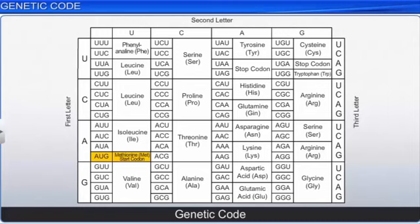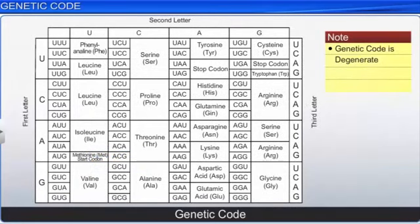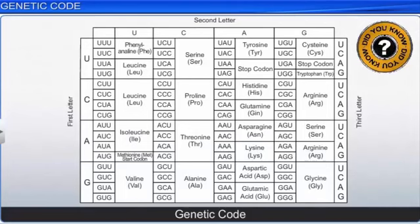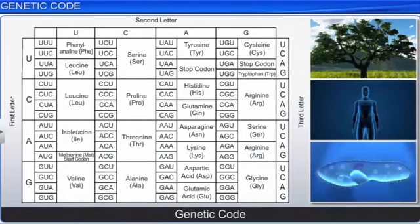Phenylalanine, on the other hand, is coded by codons UUU and UUC. Did you know that the genetic code is almost universal and the same throughout all living organisms? The codon GUG, for instance, codes for amino acid valine in plants as well as animals.